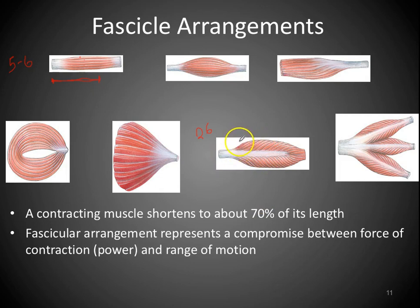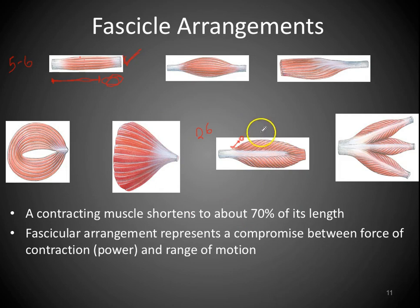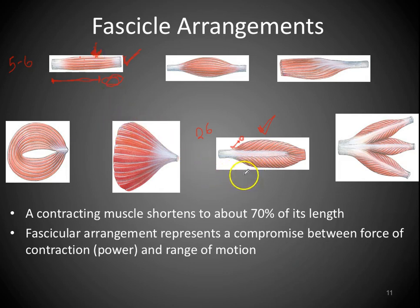But a pennate muscle can only contract about 70% of its length too, so that contraction is a tiny movement compared to a parallel-fiber muscle. That's the compromise: parallel arrangement gives a big range of motion; pennate arrangement gives more power. In the arms, the biceps has a parallel arrangement for large range of motion, while muscles needing power have pennate arrangements. Look at muscle arrangements in lab and consider where the muscle is and how it's organized.